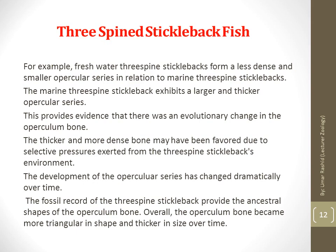The development of the opercular series has changed dramatically over time. The fossil record of the three-spined stickleback provides the ancestral shape of the opercular bone. Overall, the opercular bone became more triangular in shape and thicker in size over time. During the course of evolution, it has become more and more thick in three-spined stickleback fish.